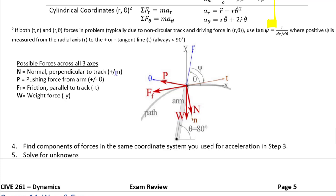The normal force is always perpendicular to the track or path. We can also have a pushing force — if we have an arm coming out along the radial r axis pushing a particle along the path, the normal force to that arm is always either positive or negative theta, which is perpendicular to r. If there is friction, it opposes the velocity. Since velocity is in the direction of the tangential axis, friction acts in the negative tangential axis direction.